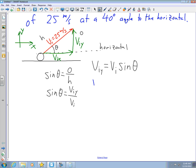So let's find VIY. VIY is equal to VI, 25 meters per second, times sine of 40 degrees. I'll pick up my calculator.